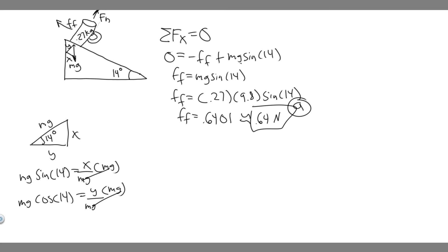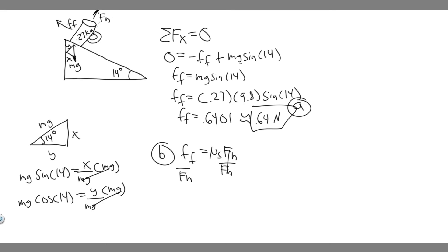Now for part B: what is the minimum coefficient of static friction required to keep the mug from moving? We use the formula: F_friction = μs × F_n. Dividing both sides by F_n, we get μs = F_friction / F_n. We already know the force of friction is 0.64 N, so we just need to find the normal force F_n.